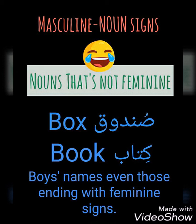A noun is masculine if it's not feminine — and also if we are talking about boys' names, males, or men. For example, we have Sunduq and Qutub: no closed Taa, no shortened Alif, no elongated Alif, and it's not a plural. So it's obviously masculine.